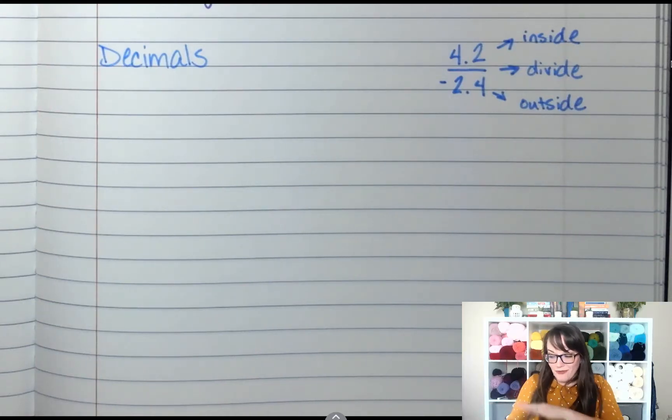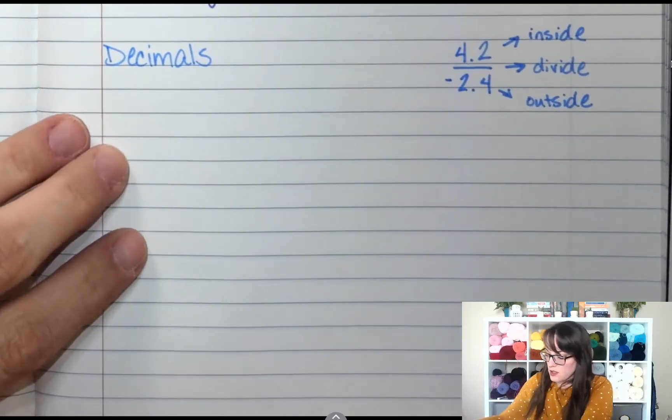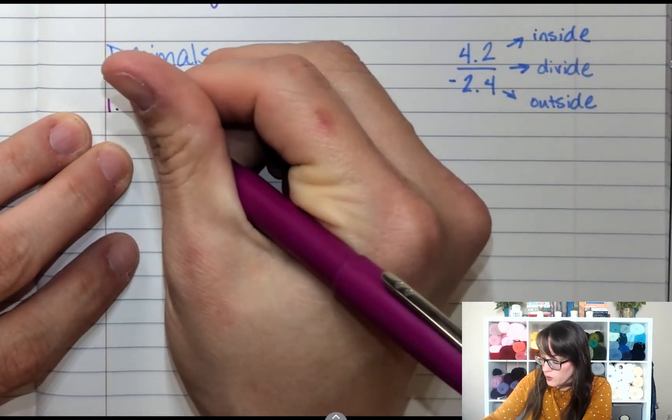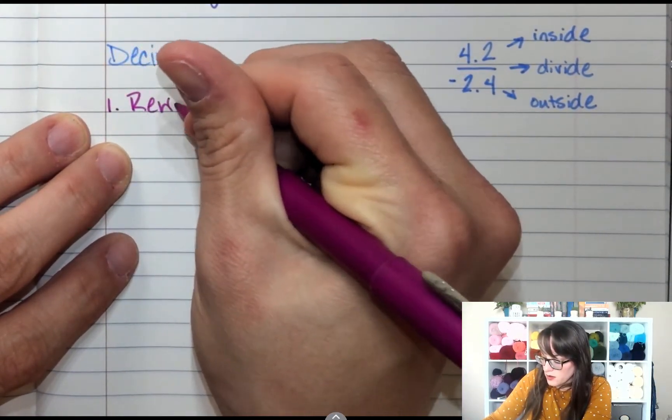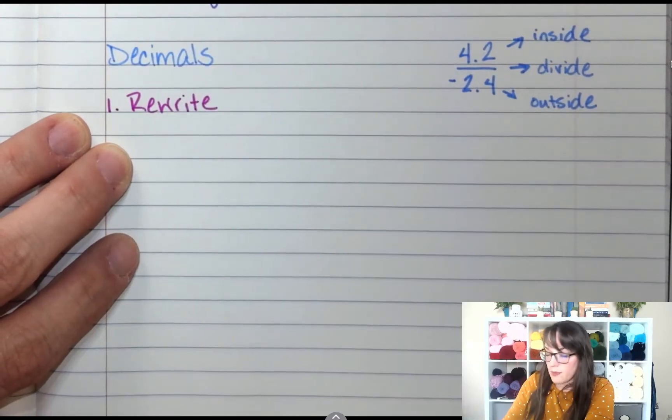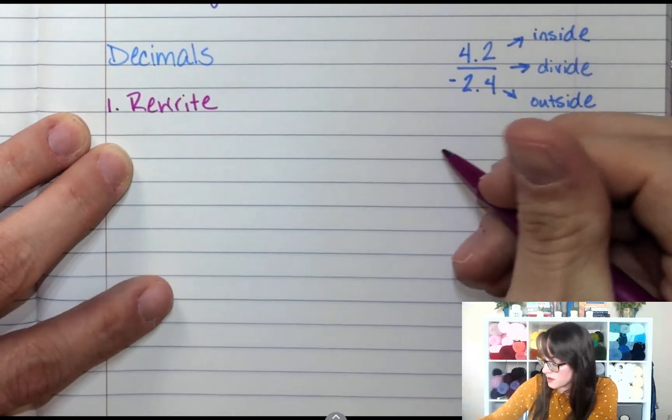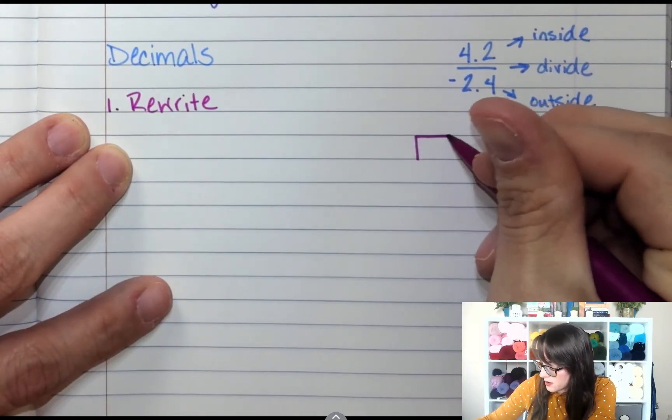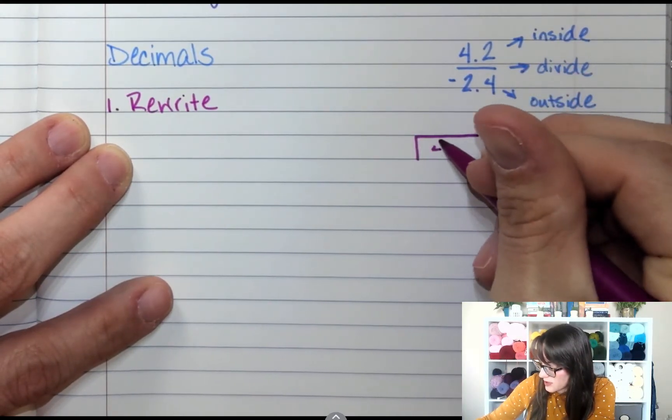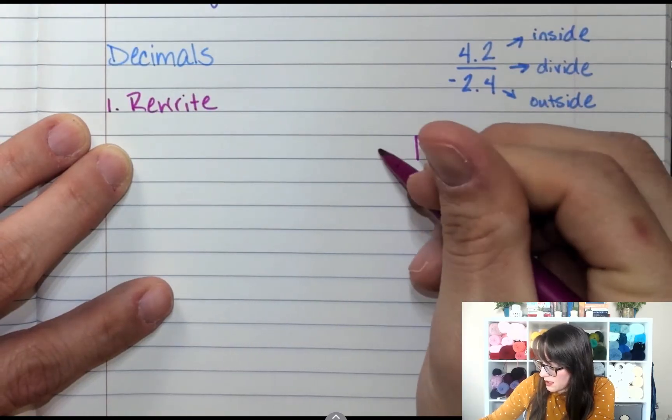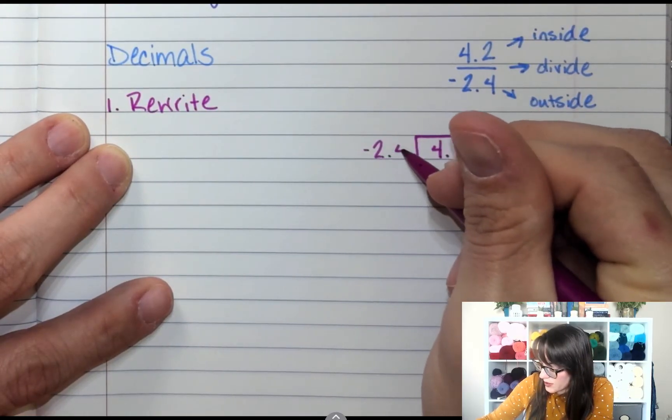So if I see something like this, if it starts like this, the first thing I want to do is rewrite it so that I can work it out. So step 1, I'm going to rewrite my problem so that inside goes in and outside goes out. So I've got 4.2 is going to go inside, and negative 2.4 is going to go outside.